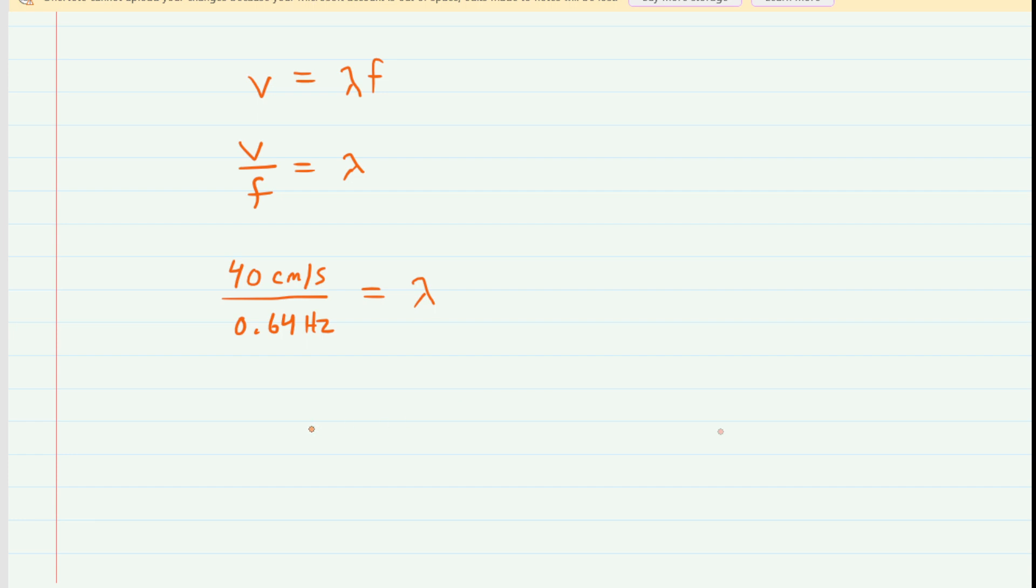So there are the values. When you compute that, you should get approximately 63. Dimensionally, we have centimeters per second divided by hertz, but hertz is 1 over seconds, so the seconds would cancel out. This gives us a wavelength in the unit of centimeters. This is the correct answer to part b of the question.